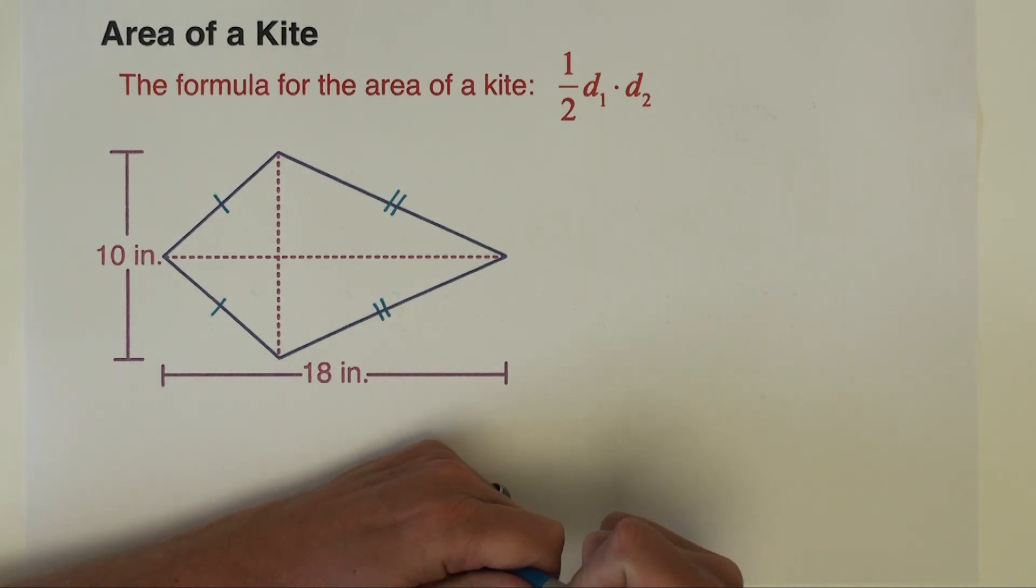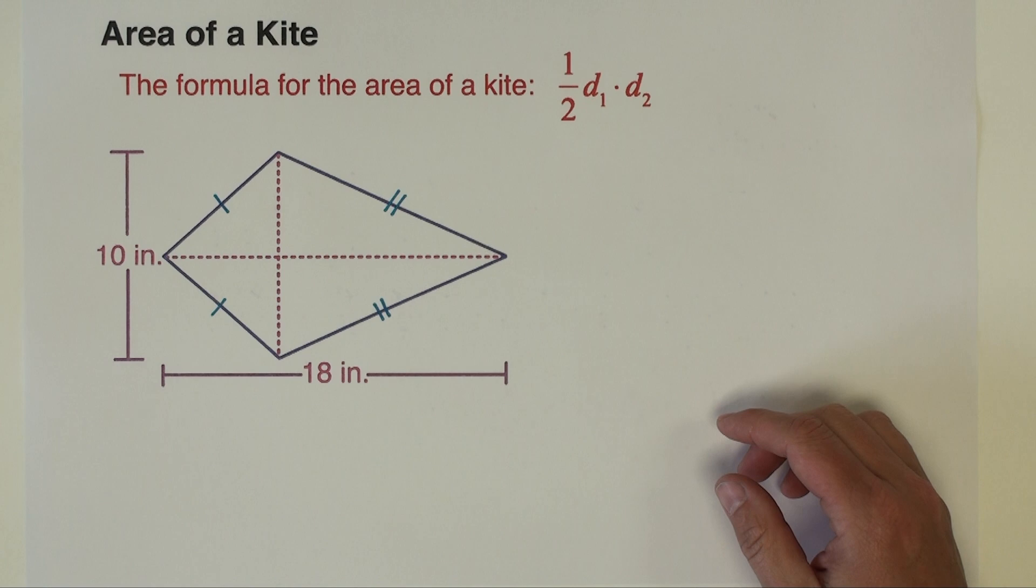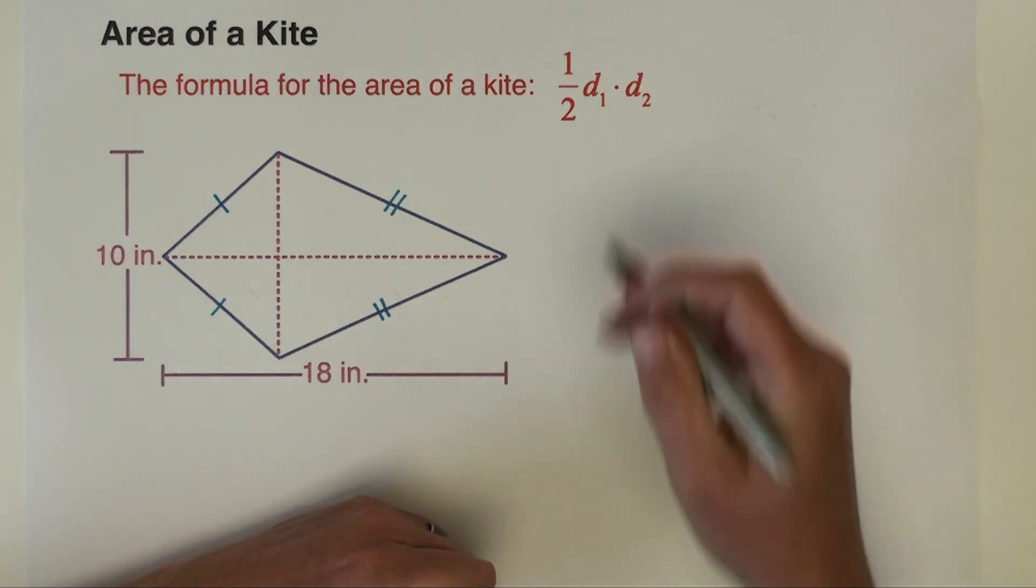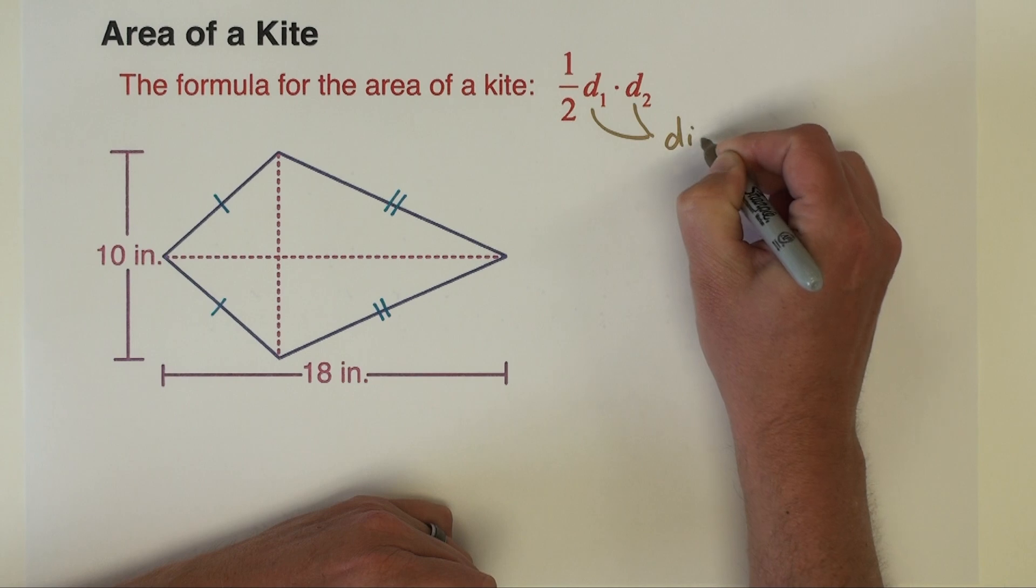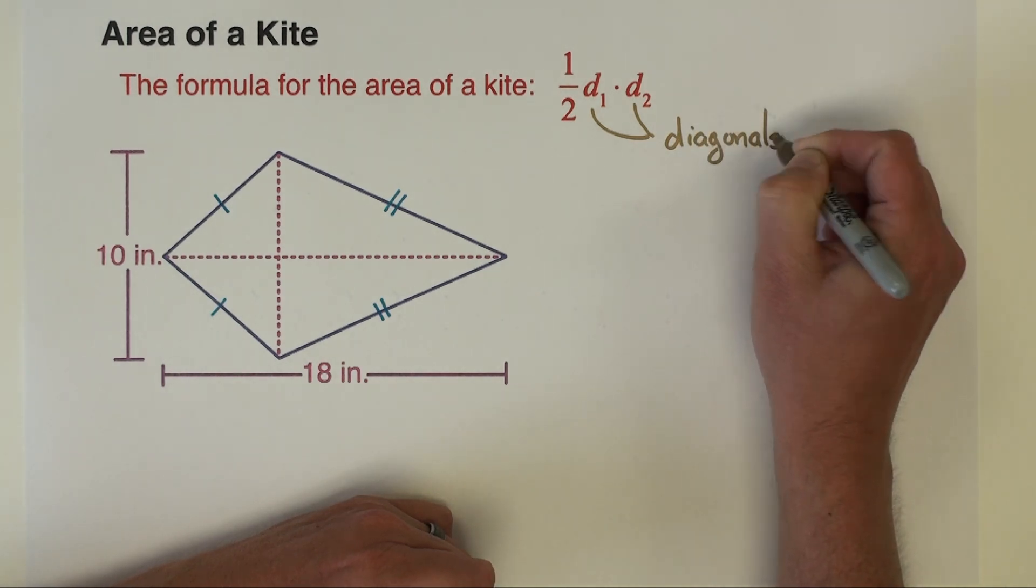So if we have those markings or if we're told that we do have a kite, then we can find its area using this formula. The area is one half d₁ times d₂, and the d₁ and d₂ are the lengths of the diagonals of the kite.